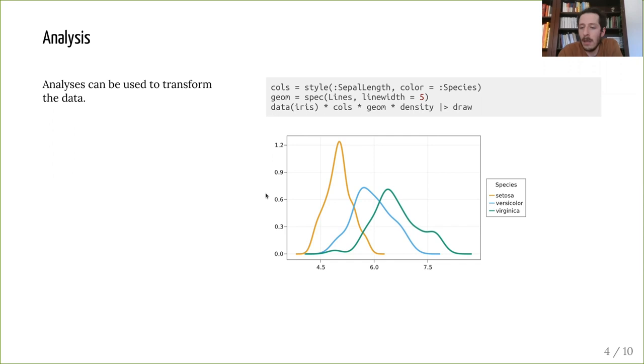where I select the columns that I'm going to use. I select the data-independent part. And then I say that not only it's the data set and the columns and the geometry, but also I will perform some processing by this analysis. So when I draw this, it will compute the density of this column and then plot it.